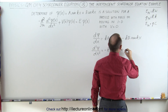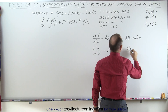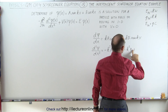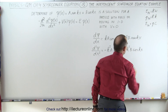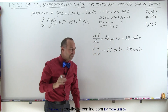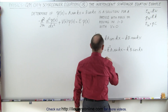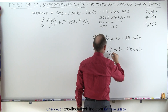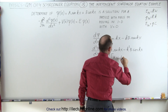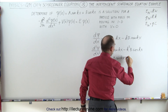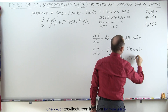Then for the next term, the derivative of the sine is the cosine, and the derivative of the angle is k, so we have minus k squared times b times the cosine of kx.